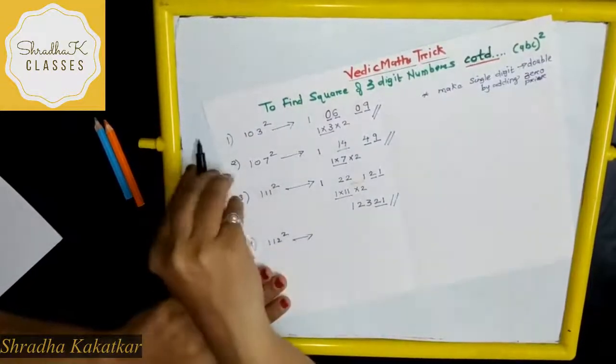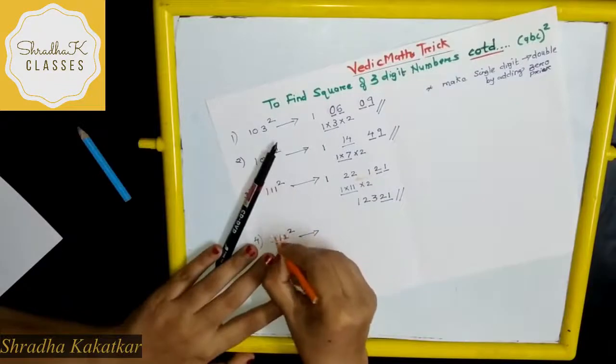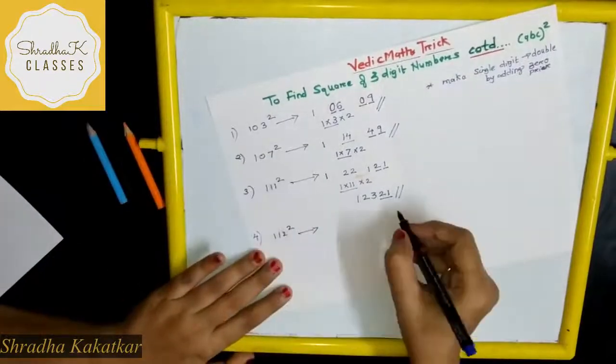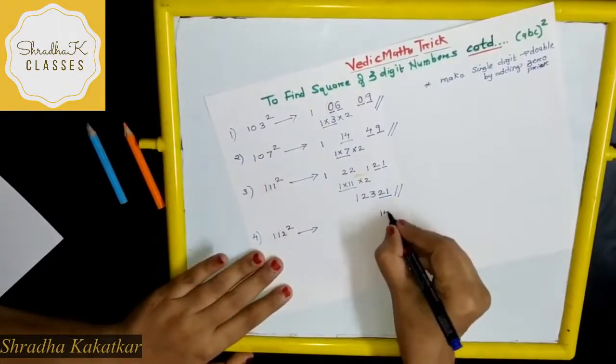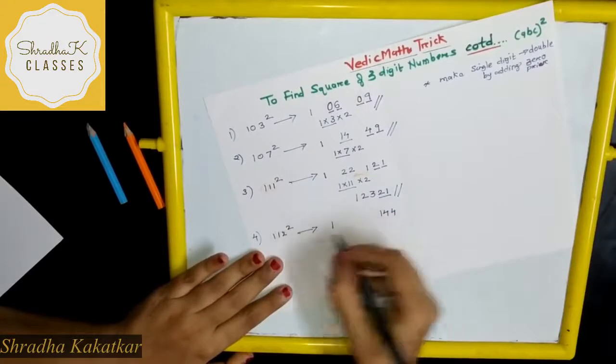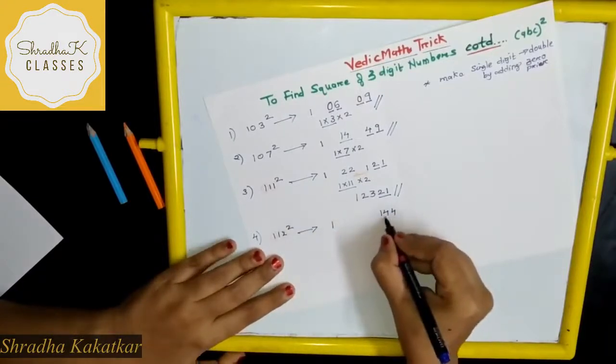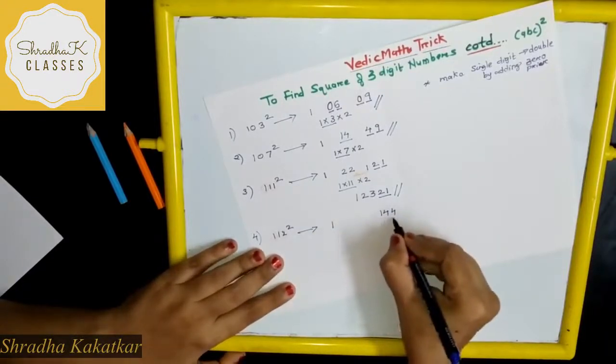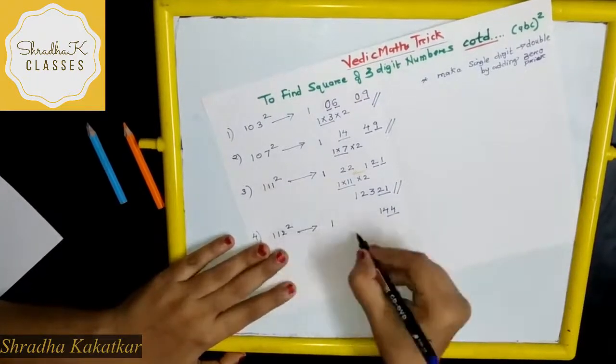So again, 12 and 1. 12 square is what? 144. 1 square is 1. Then here how many digits we got? 3. These 2 digits we have to keep as it is.